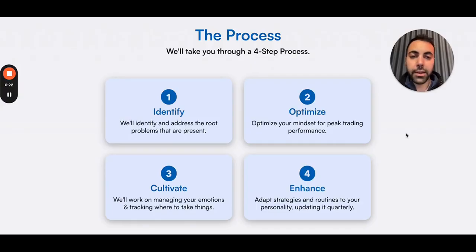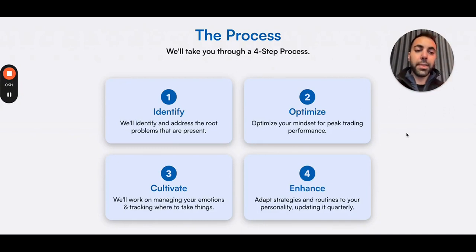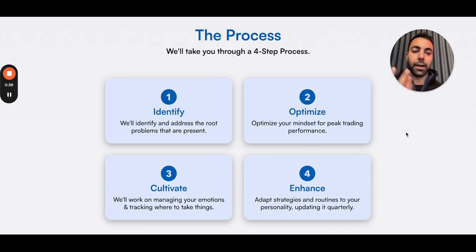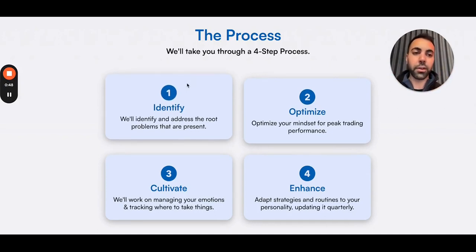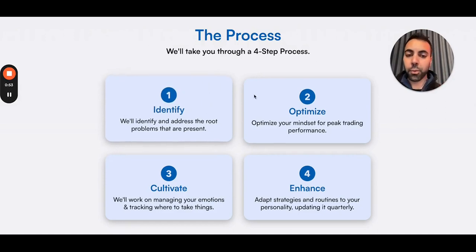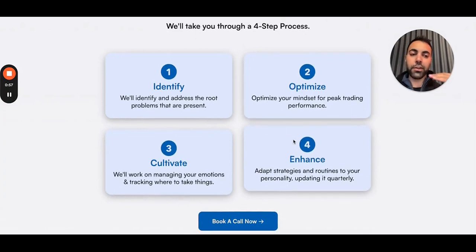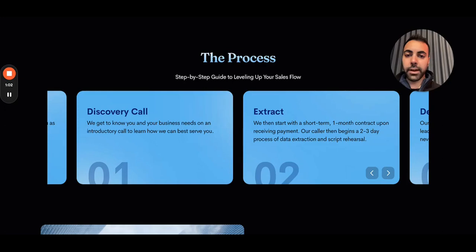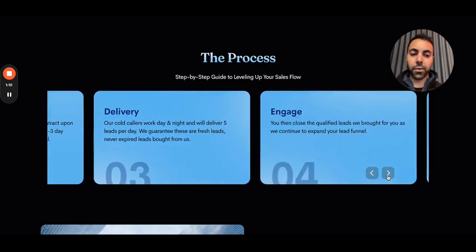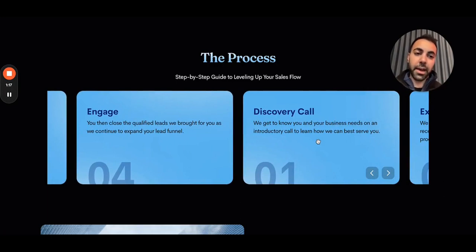Another section that doesn't get talked about enough is the process — just walking people through what it's like to work with you. Keep it very simple. This is mainly for service businesses, B2B, and agencies. Four steps is ideal; if you can keep it to four, that's perfect, no more than five. I'll add a CTA below the process section as well. There are many different ways to do it, but it's something very important that can make a difference — pieces coming together become more than the sum of their parts.